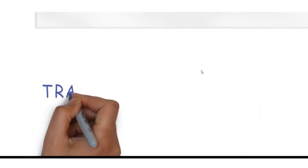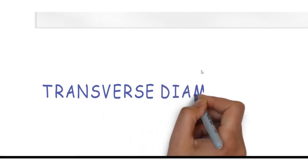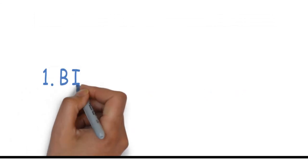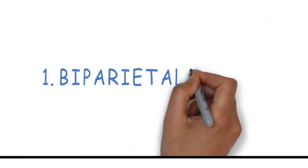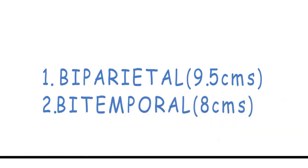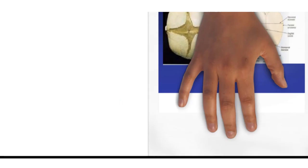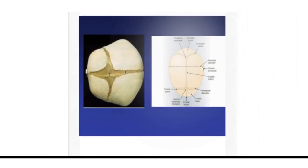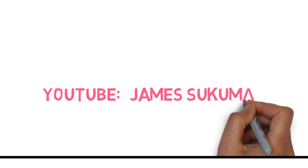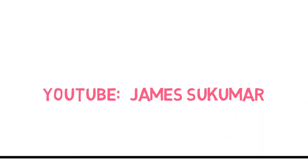The two transverse diameters we are most concerned with are: the biparietal diameter, which is 9.5 cm and extends from the right parietal eminence to the left parietal eminence — this is the maximum transverse diameter — and the bitemporal diameter, which measures 8 cm.